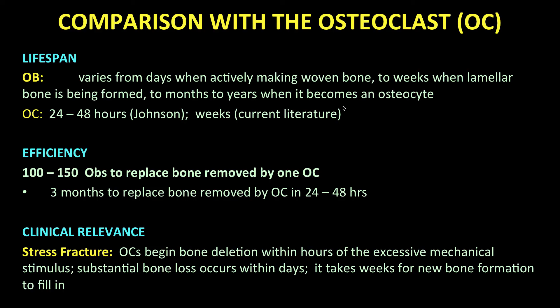The osteoclast, on the other hand, is a shooting star lasting just a couple of days. It's a mobile, acid-laden cell that moves along the bone surface or tunnels within the cortex, deleting so much bone over its short lifetime that it takes 100 to 150 osteoblasts to replace it. The bone removal takes days, and this is the key — the replacement takes weeks to months. This is clinically relevant, for it is the basis for the development of the stress reaction, which may lead to an actual fracture. The osteoclasts are turned on within hours of the initiation of unaccustomed stress, and within days are deleting massive amounts of bone, creating a zone of regional bone weakness within a week. It takes weeks for the innumerable osteoblasts recruited to make enough bone to correct the problem. It is in this time of substantial weakness of the bone that the symptoms develop.